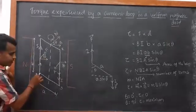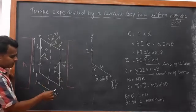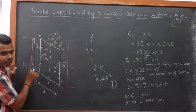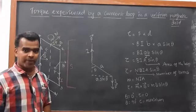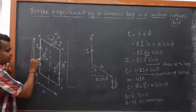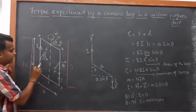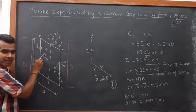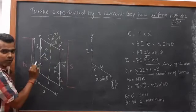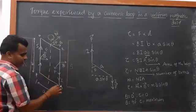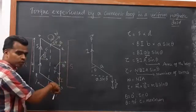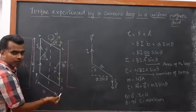The rectangular coil has side PS equal to 'a' and PQ equal to 'b', so the area of the loop is a × b, that is A. The magnetic field is projected towards the south pole and the current is going in the upward direction. Applying Fleming's Left Hand Rule, the force acts in the inward direction with respect to the normal.